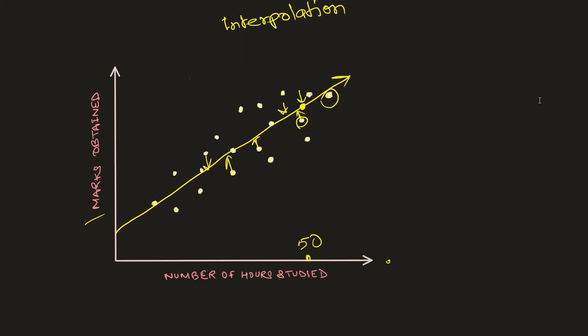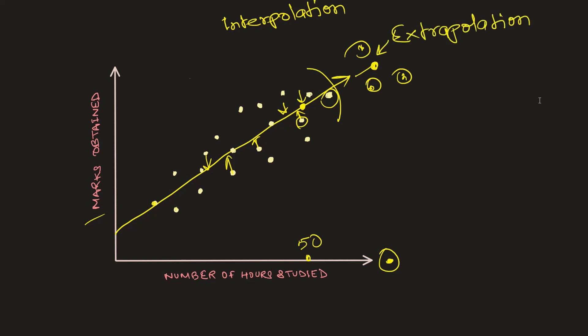But if someone tries to predict marks for a number of hours studied at a value our model has not seen before — beyond the observed range — the actual value may fall in different places, yet our straight line predicts a specific point. Since this prediction falls outside the scope of previously observed values, it is called extrapolation.